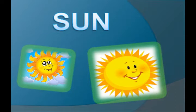Sun is the main source of light and it gives us heat and light. It is very important for all living things. If there is no sun, there is no life on the earth.